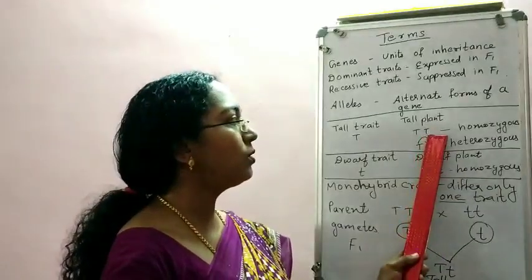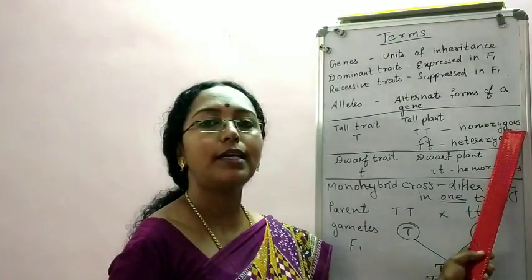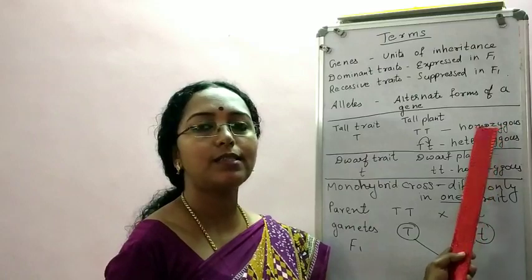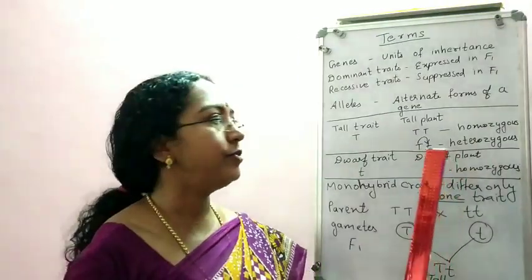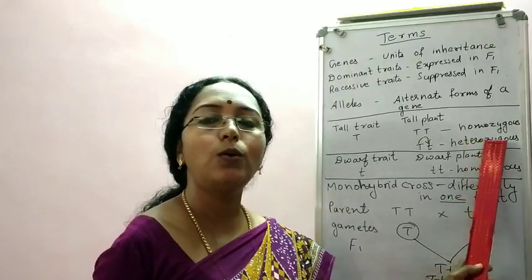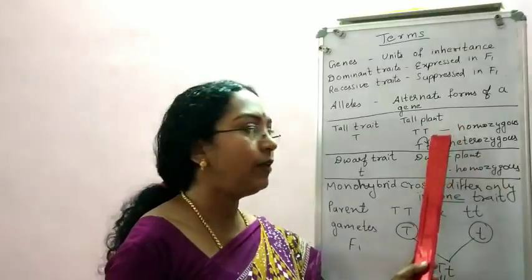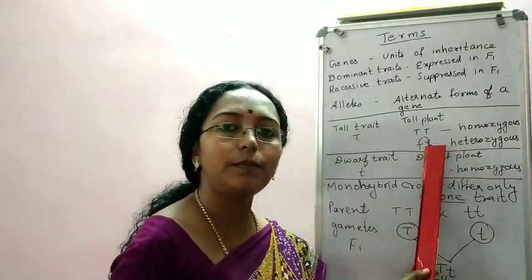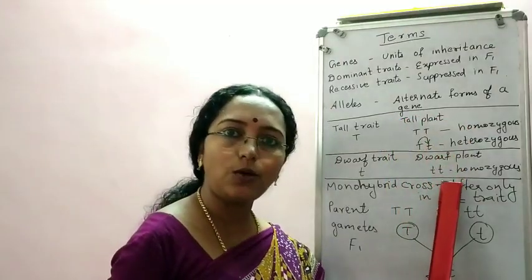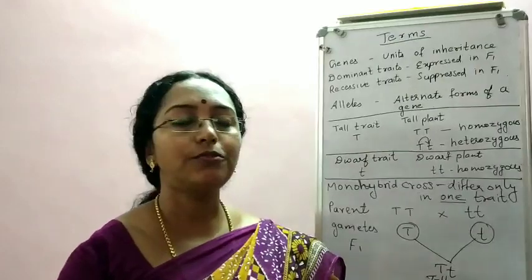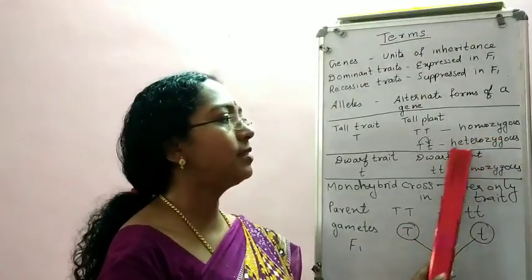This plant with capital T, capital T is pure tall — both alleles are the same. Such plants are called homozygous plants — homozygous for the character height. Homo means same. So capital T, capital T represents a homozygous tall plant. If I write capital T, small t, it is different — so it is hetero, heterozygous tall plant. Both are tall, but they differ in their alleles. To show this difference, we use two new terms: homozygous and heterozygous.